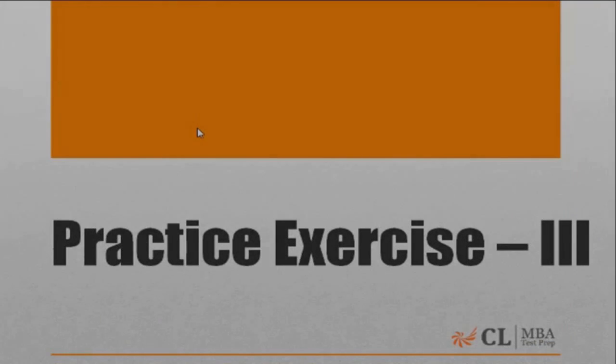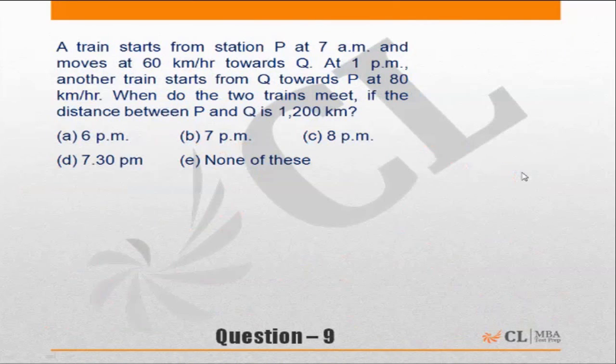Practice exercise 3, time speed distance. Question 9. A train starts from station P at 7am and moves at 60 km per hour towards Q. At 1pm another train starts from Q towards P at 80 km per hour. When do the two trains meet if the distance between P and Q is 1200 km?